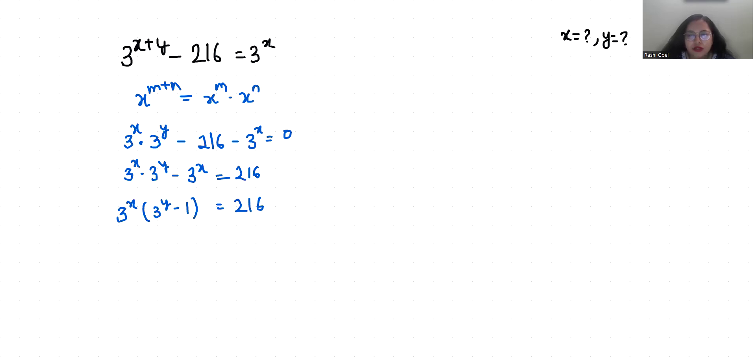Now if we take out the LCM of 216, it gives us 2 times is 108, 54, then 27, then 3 times 9, 3 gives us 3 and 3 gives us 1. So 3^x × 3^(y-1) = 2^2 × 3^3.